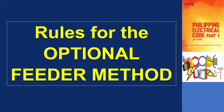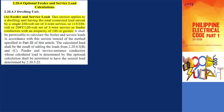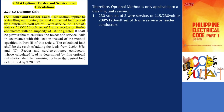What are the rules for the optional feeder method? Section 2.20.4.3, Optional Feeder and Service Calculation for Dwelling Units, states that the total connected load served by a single 230-volt set of two-wire service, or 115/230-volt, or 208Y/120-volt set of three-wire service or feeder conductors with an ampacity of 100 or greater may be calculated in accordance with this section instead of section 2.20.3. Therefore, the optional method is only applicable to dwelling units served by such configurations with an ampacity of 100 or greater.